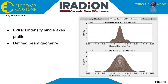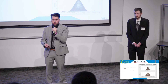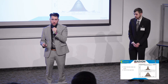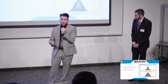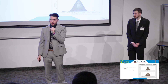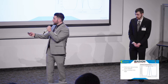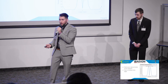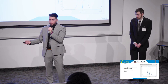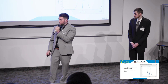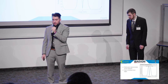The next feature is the ability to extract the intensity profile for both the stable and unstable axes. This provides the beam geometry data, which makes it possible to isolate and analyze each individual axis's characteristics. Lastly, we added functionality to predict the power output as a function of the mirror angles. Seen here is the power output as a result of varying the front mirror angle and sweeping the back mirror, which shows optimal cavity designs for Iradion.